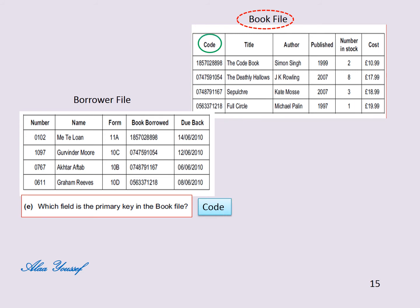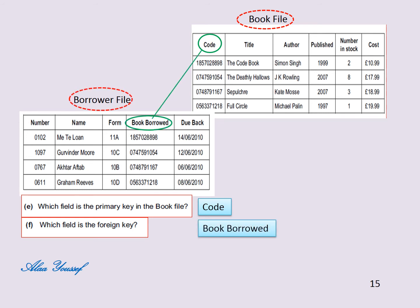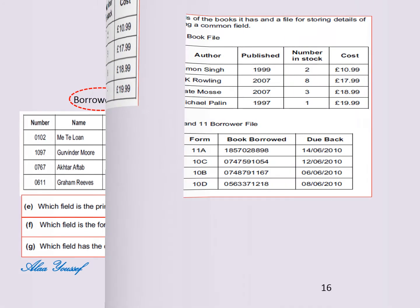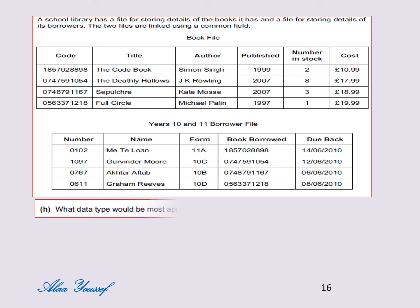F) Which field is the foreign key? We are looking for a common field in both tables that is a primary key in one table. The answer is: book borrowed is the foreign key. G) Which field has the data type currency? The answer is cost. H) What data type would be most appropriate for the due back field? The answer is date.